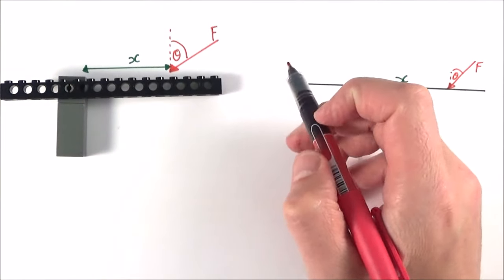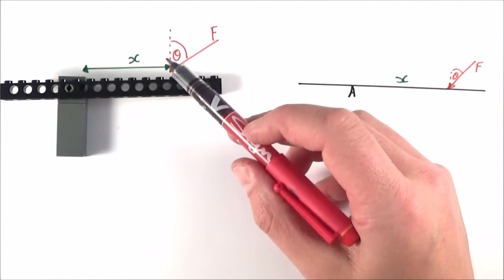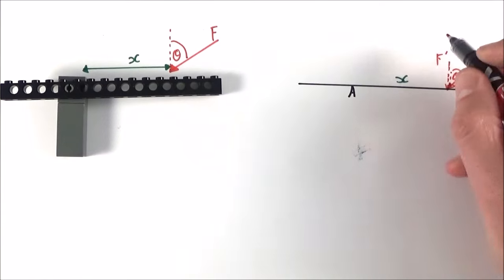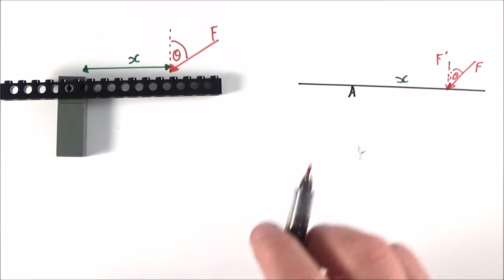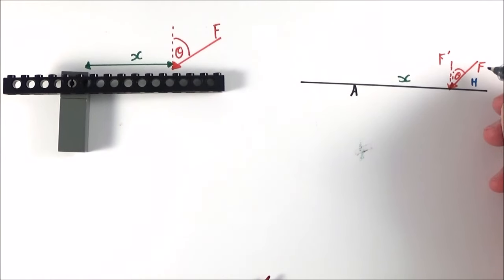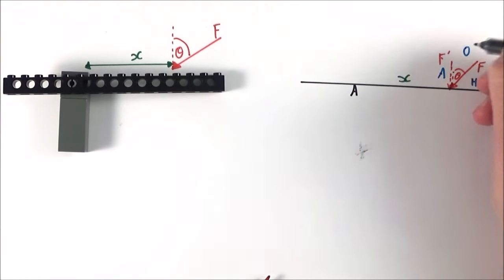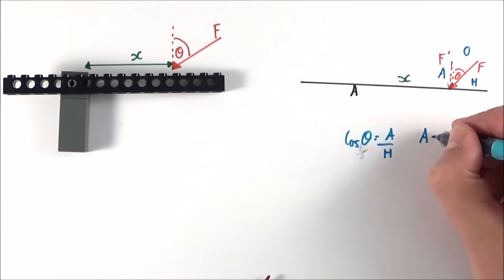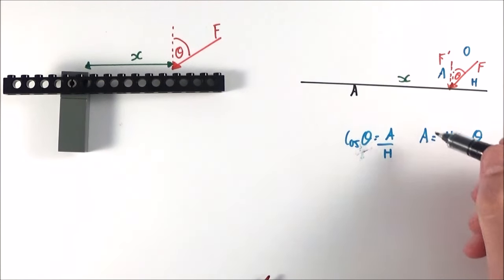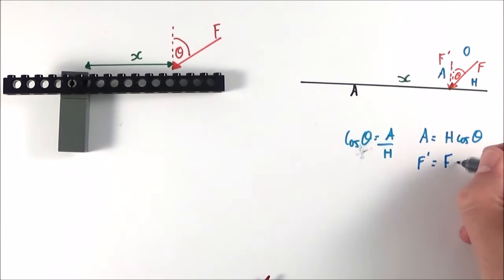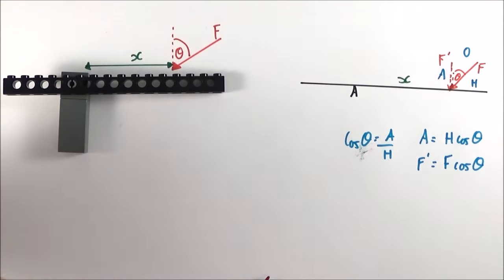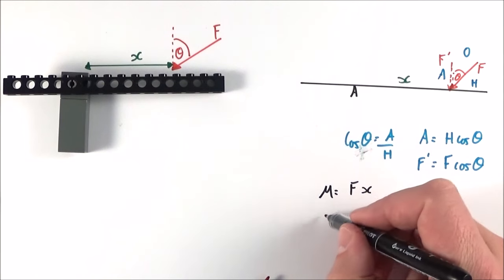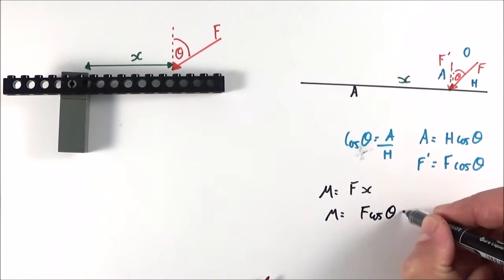The second approach is to resolve the force into its component perpendicular to the beam, and then use that component at the distance X. Considering the force triangle, F is the hypotenuse and the perpendicular component F' is the adjacent side. Using cos theta equals adjacent over hypotenuse, we get F' = F cos theta. The moment then equals F cos theta multiplied by X — the same result as before.